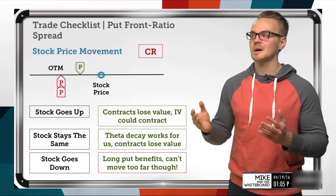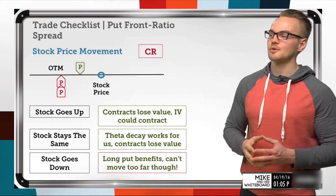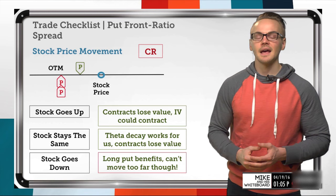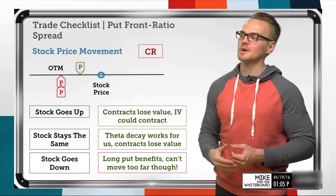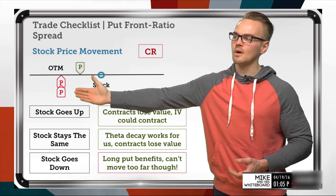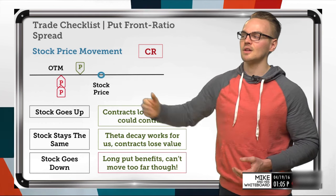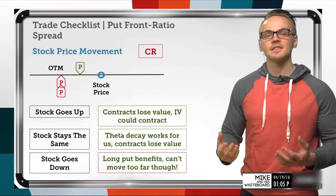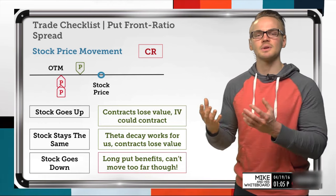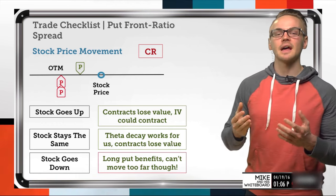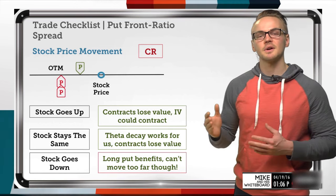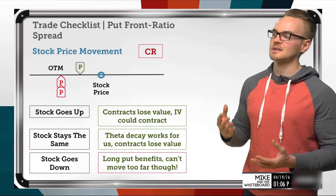If the stock price stays the same, theta decay works for us and all contracts lose value. It's bad for our long put losing value, but we doubled down on the short puts, so theta decay benefits us more on those short options than it offsets us on the long. Since we routed this for a credit, we have a positive theta strategy. With two short options versus one long, we're going to have a positive theta aspect throughout pretty much the whole trade.